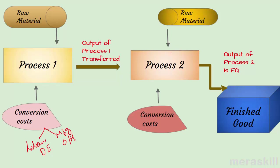The output of this process is transferred to the second process. In process two, the input is the output from process one. Maybe more raw material is added, other labor works here, there are other overheads — depreciation, power, etc. And therefore you get an output. Finally, maybe you are getting 10,000 kgs of detergent as finished goods. Process one and process two are like work in process accounts, and from there it is transferred to finished goods, which are then sold.